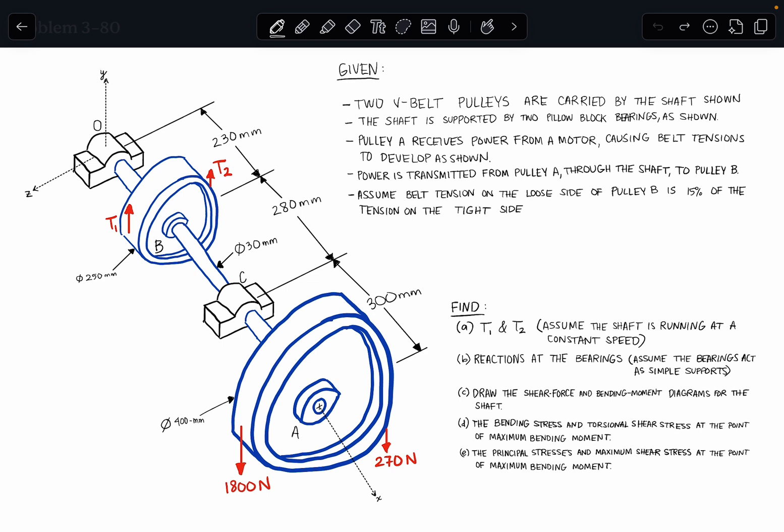And then pulley A is going to receive power from a motor, which causes belt tensions to develop as shown. So this pulley A here, if we were to draw what the belt wrapped around this pulley might look like, it comes down here, and it's receiving power from a motor, which is driving this pulley A.